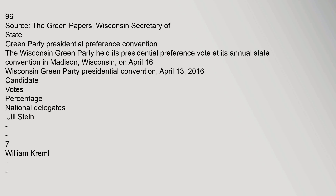Green Party Presidential Preference Convention. The Wisconsin Green Party held its presidential preference vote at its annual state convention in Madison, Wisconsin, on April 16. Green Party presidential convention, April 13, 2016. Candidate votes and percentage of national delegates: Jill Stein 7, William Kreml 1.